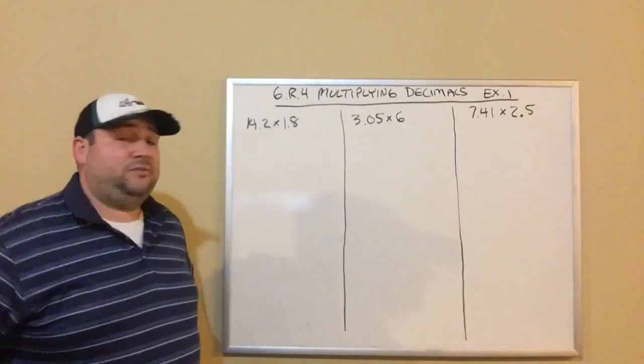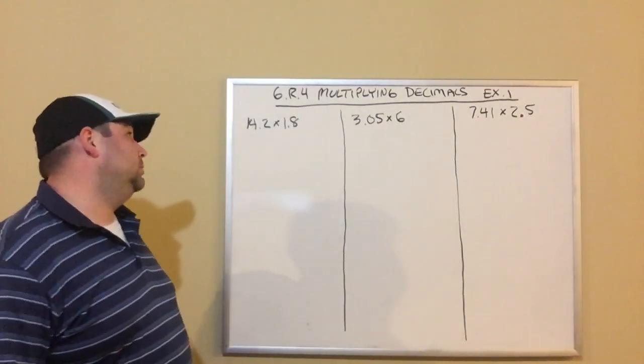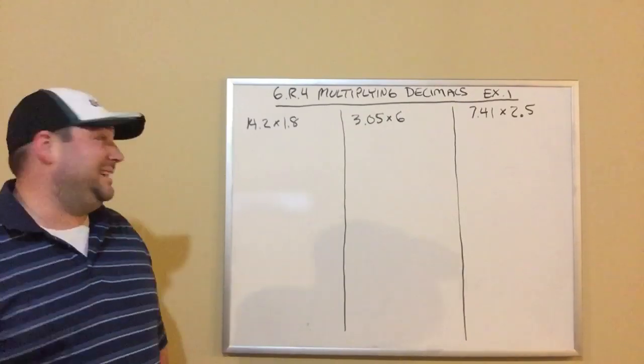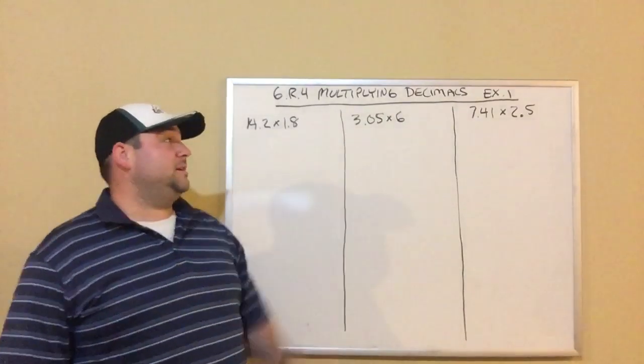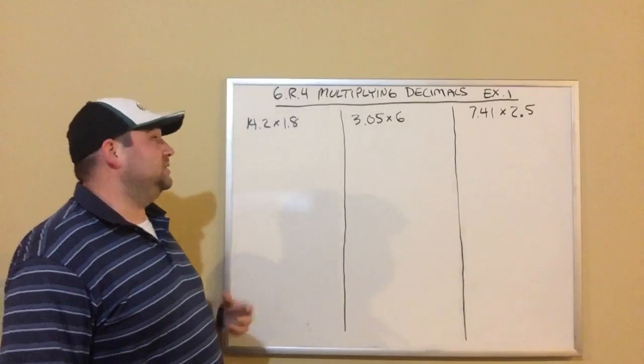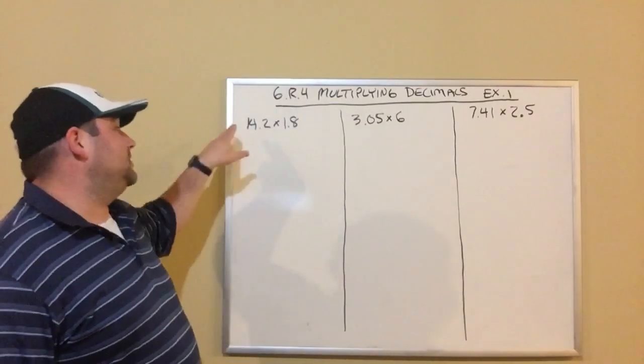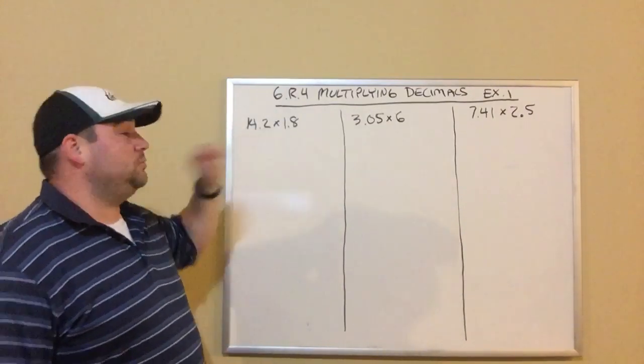Sixth grade, we are on day four of our review. Today we're talking about multiplying decimals, so we got three examples here that we are going to complete. Our first problem is 14.2 times 1.8.